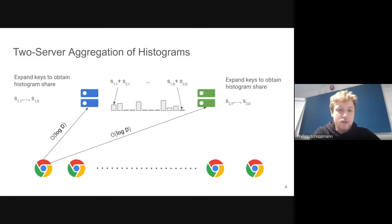The advantage of this approach is that the client has to send only a single message to each server, so it's a fire-and-forget setting. The message sizes, when using the DPF-based protocol that I'm going to present soon, are logarithmic in the domain size, so that's another advantage over the single server setting. Finally, we can have verifiability, which means that the two servers can verify that the contribution of a single client is indeed a one-hot vector or comes from a certain domain.